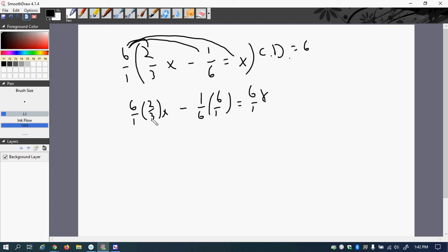Okay, so you can see that the 3 can divide into the 6 because 6 divided by 3 is 2, and 2 multiply by 2 is 4. And then you see that the 6 divided by 6 is 1, and so 1 times 1 is 1, and then 6 times x is 6x.